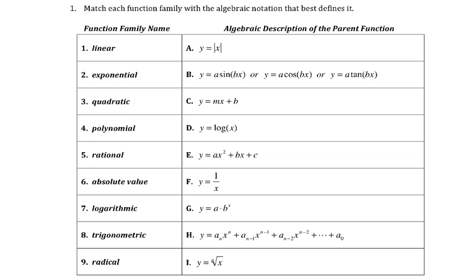For linear, it's going to be in that slope-intercept form where we have 1y, 1x, no squares, no anything like that. So linear would be c. Exponential has an exponent — the exponent is the variable, so it would be g, because it has a number; that b stands in for a number. Whereas h has a variable as an exponent but it's on the x. So exponential would be g.